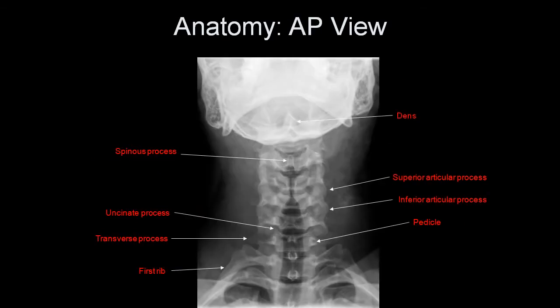On the AP view, you can see the dens projecting over the mandible, the spinous processes, the uncinate processes of the vertebral bodies, the transverse processes, the superior and inferior articular processes, the pedicles, which are round, and the medial aspects of the first few ribs. When counting vertebral bodies, the first fully formed vertebral body you see is C2, not C1.